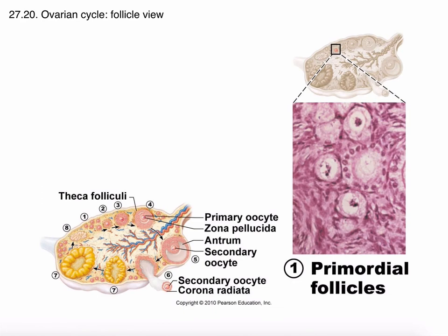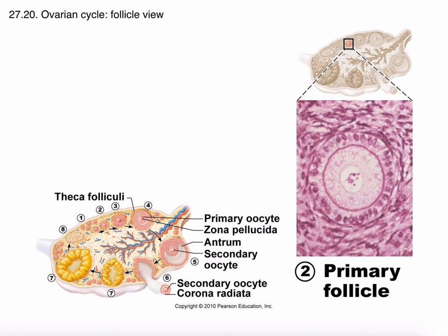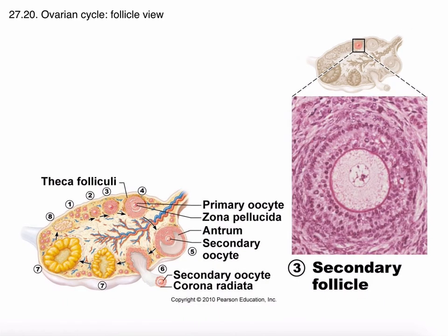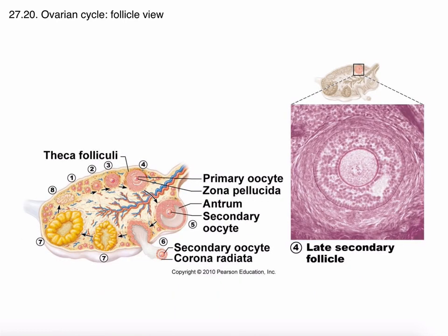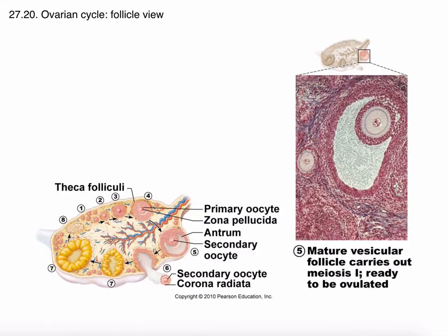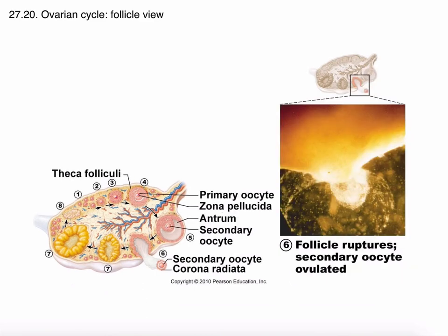Going through the follicle development cycle: a primordial follicle has the oocyte inside with a single layer of granulosa cells around it. A primary follicle is slightly larger but still has basically a single layer of granulosa cells, with thecal cells just outside being stimulated by LH. A secondary follicle is identified when there are at least two layers of cells. It continues to increase in size, and later develops a small void filled with fluid called liquor folliculi. That void continues to expand in the mature or vesicular follicle, and at ovulation the fluid helps push the oocyte out.